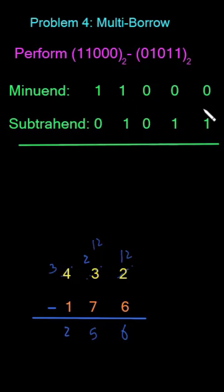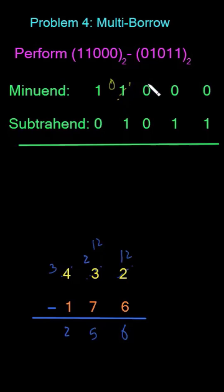I have to subtract 1 from 0, which isn't possible. So I go to the next column, which is also 0, and I have to go further to find a 1. Here I don't have a 1, so I go to this column. Here I borrow 1, so it is left with 0, and 1 is borrowed to this column — that will be equal to 2. Now I borrow 1 from this 2 to the next column, so this one is left with 1, and 1 is borrowed to this column.